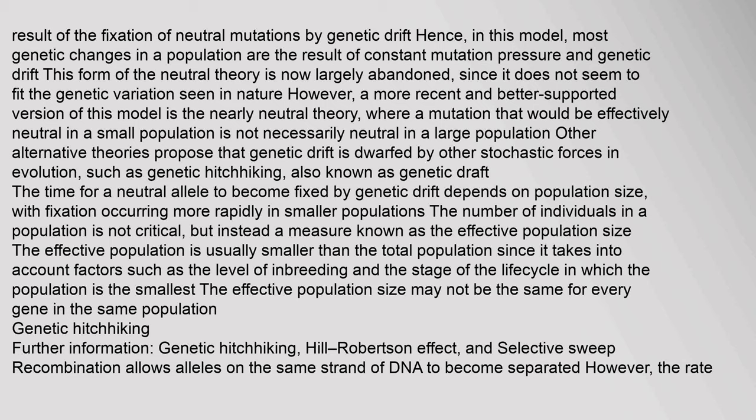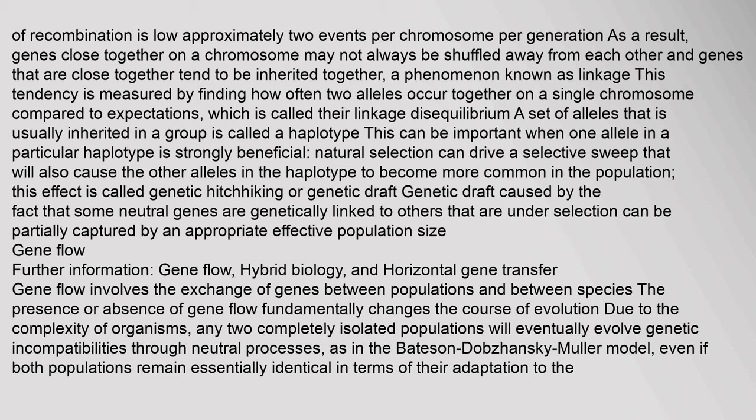Genetic Hitchhiking: Recombination allows alleles on the same strand of DNA to become separated. However, the rate of recombination is low — approximately two events per chromosome per generation. As a result, genes close together on a chromosome may not always be shuffled away from each other — genes that are close together tend to be inherited together, a phenomenon known as linkage. This tendency is measured by finding how often two alleles occur together on a single chromosome compared to expectations — called linkage disequilibrium. A set of alleles that is usually inherited in a group is called a haplotype. Natural selection can drive a selective sweep that will cause the other alleles in the haplotype to become more common — this effect is called genetic hitchhiking or genetic draft.